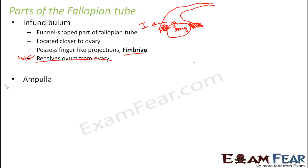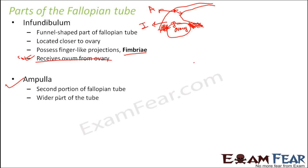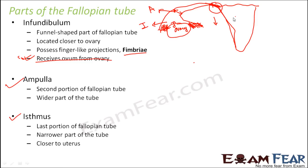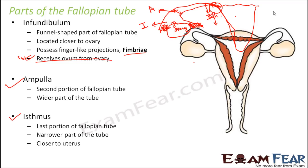The next part is the ampulla, the second portion next to the infundibulum. It is quite wide compared to the other parts of the fallopian tube. It connects to the last region — the isthmus — which is the narrower part closer to the uterus. This narrow part of the fallopian tube finally ends in the uterus. So to summarize: this is the infundibulum, the next wider portion is the ampulla, and then the narrow portion is the isthmus.